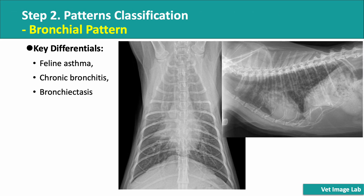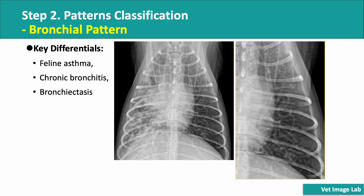Bronchial infiltrates are commonly seen in conditions like allergic airway disease such as feline asthma, chronic bronchitis, and bronchiectasis. This X-ray is a case of feline asthma; you can see the thickened bronchial walls making the airways more prominent. Because in many cases of feline asthma, interstitial infiltrates are also present, making the lungs appear dirty. If you focus on the left lung, you'll notice multiple round, ring-like patterns — a classic sign of bronchial infiltrates where thickened bronchial walls create the tramline and ring-like effect.